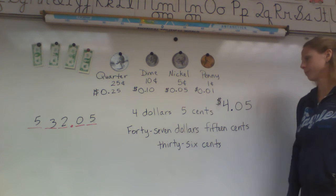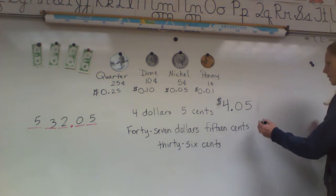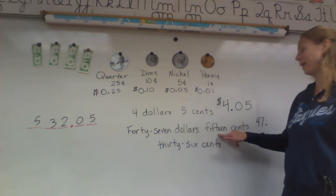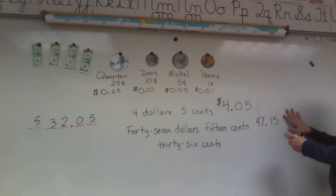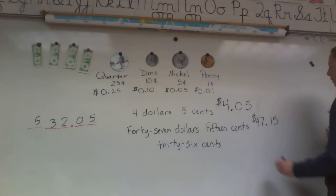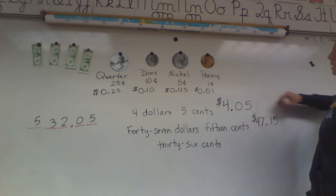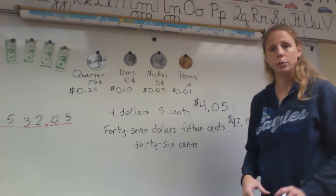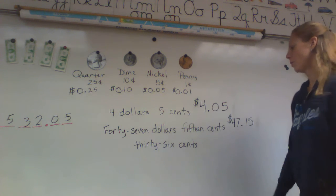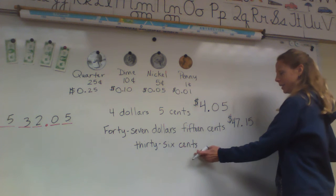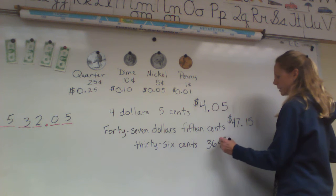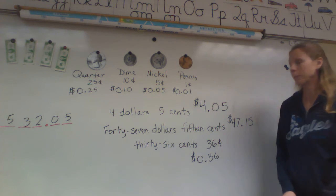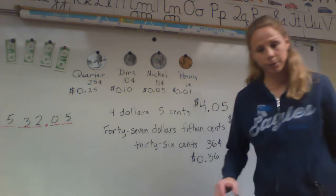This next one we have 47 whole dollars and then we have some change — 15 cents. Since we have dollars, we're going to write it as $47.15. Don't put a cent mark at the end for that. You would only use the cent mark if you just have some cents — coins, not any whole dollars. This last one here is 36 cents, so there are no dollars. You could write it 36¢ or $0.36.